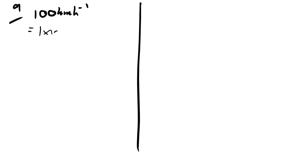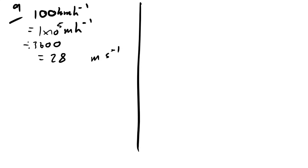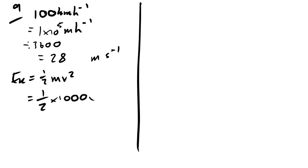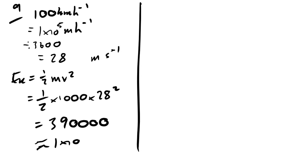Question 9: estimate the kinetic energy of a car at 100 km/h. Converting: 100 km/h ≈ 28 m/s. Using KE = ½mv² with mass ≈ 1000 kg: KE = ½ × 1000 × 28² ≈ 390,000 J. A heavier car might give closer to 10⁶ J, so the answer is B.